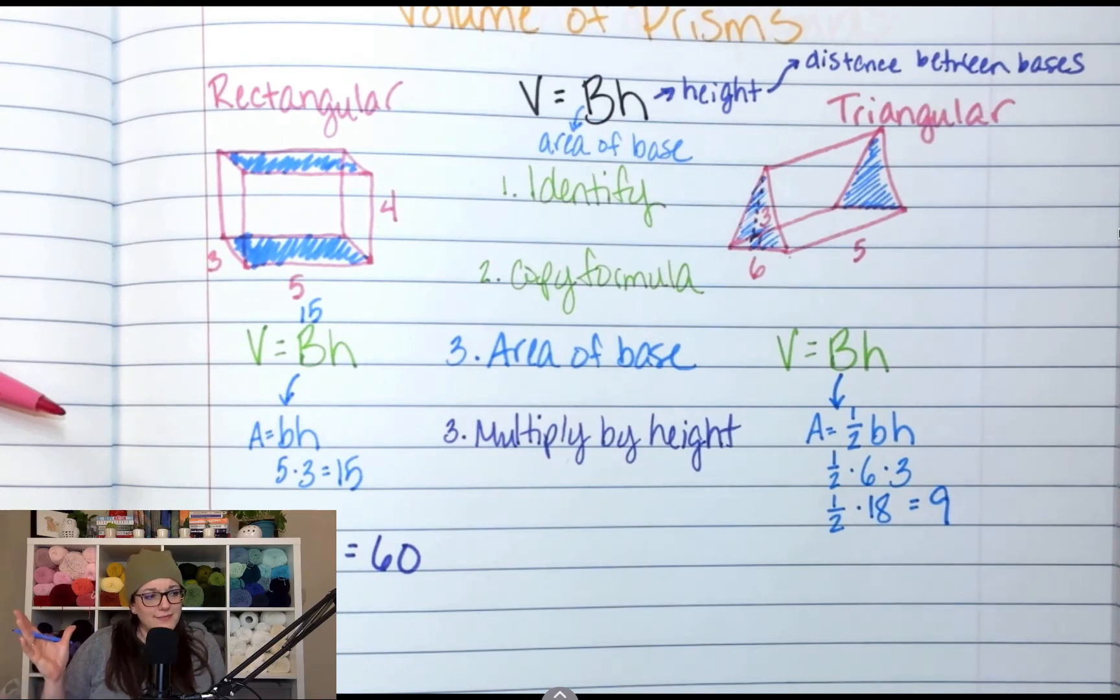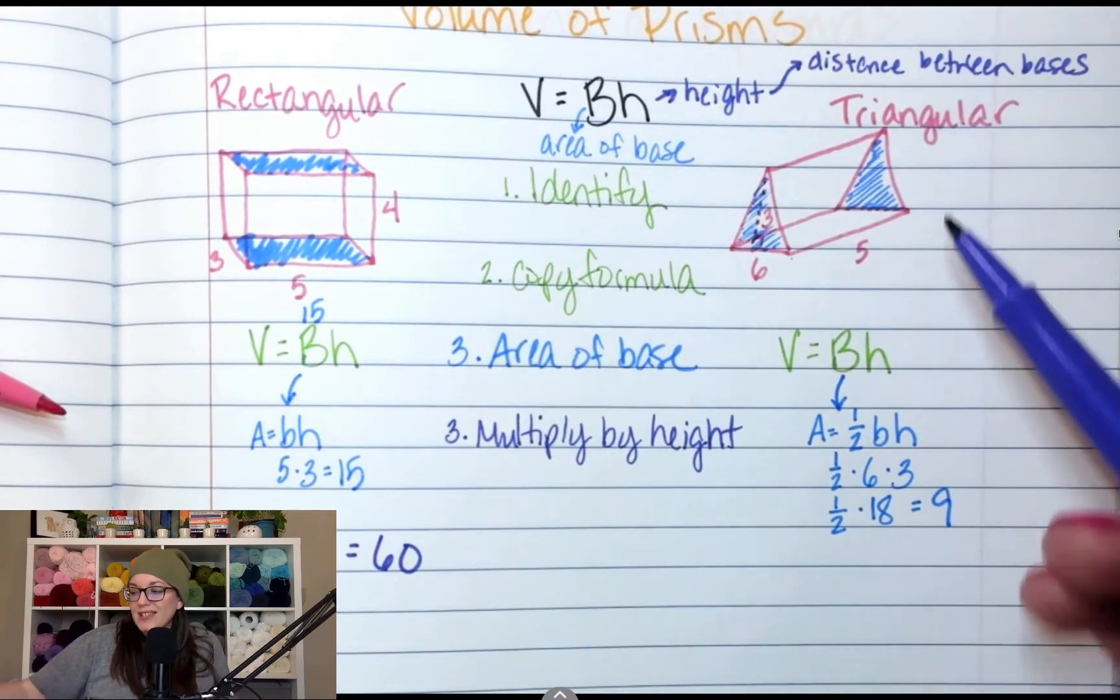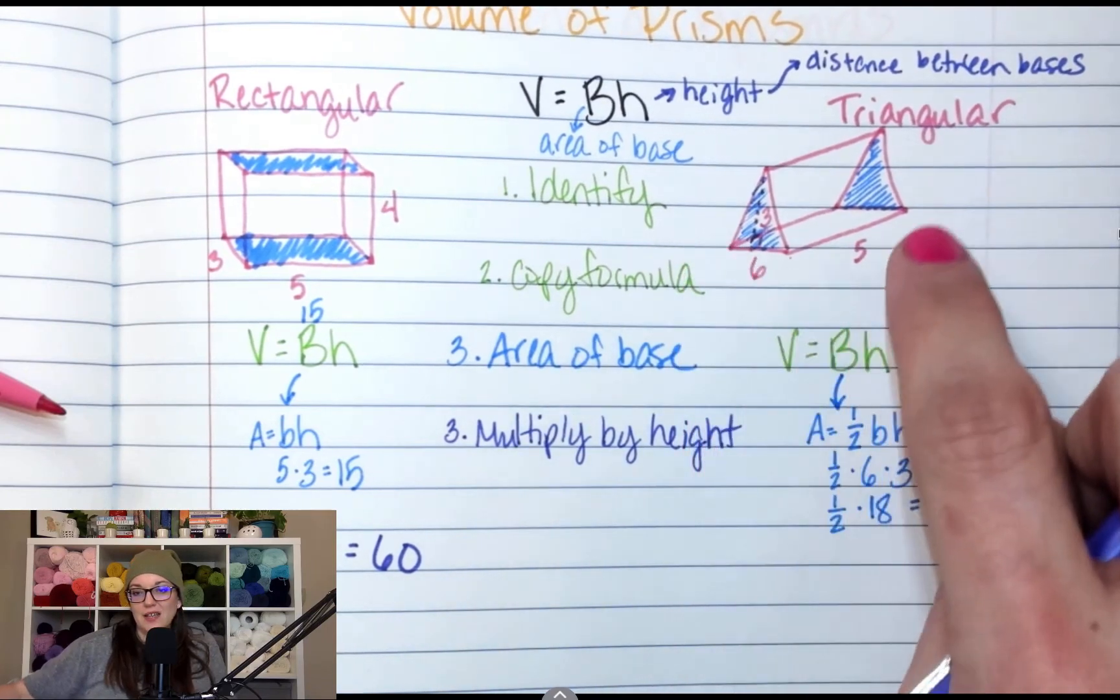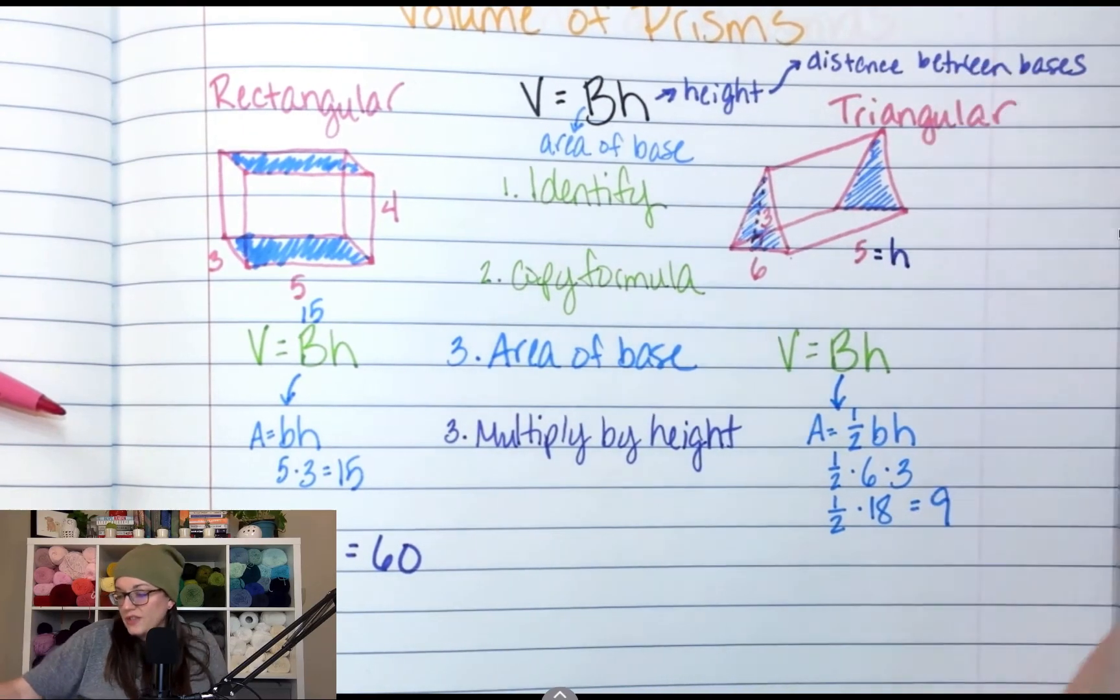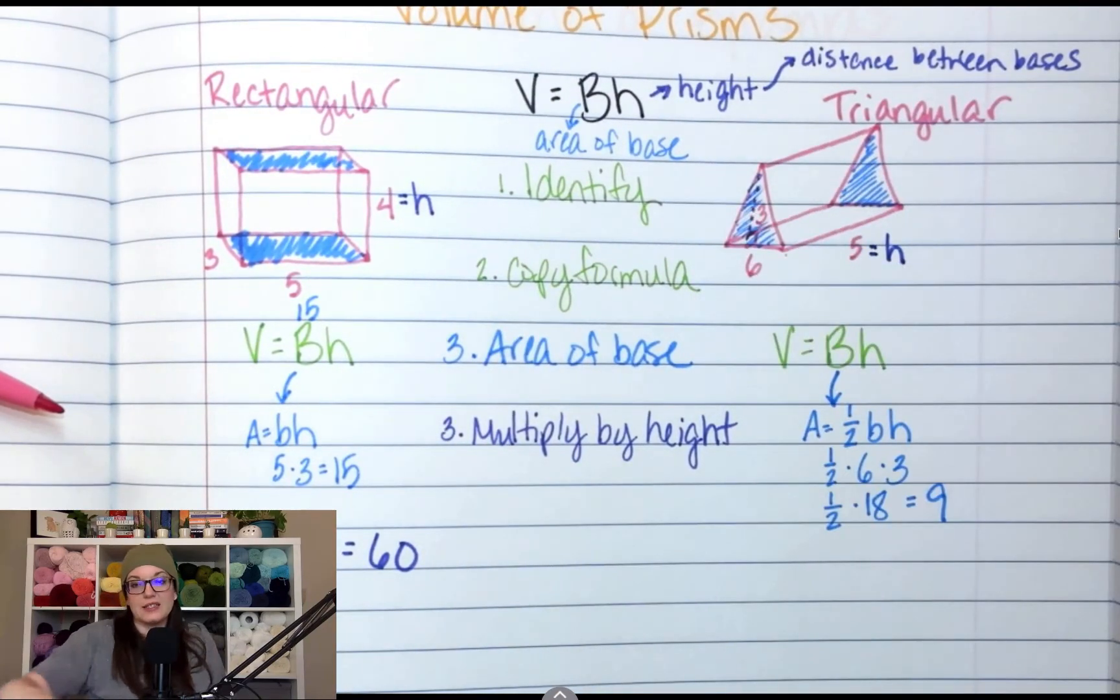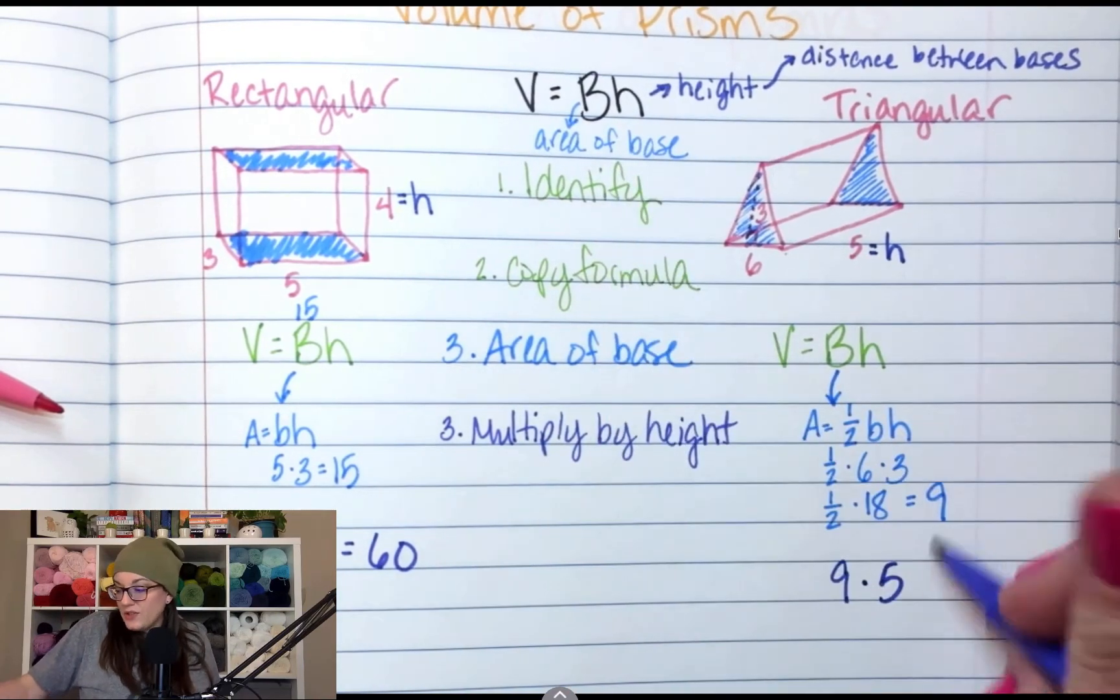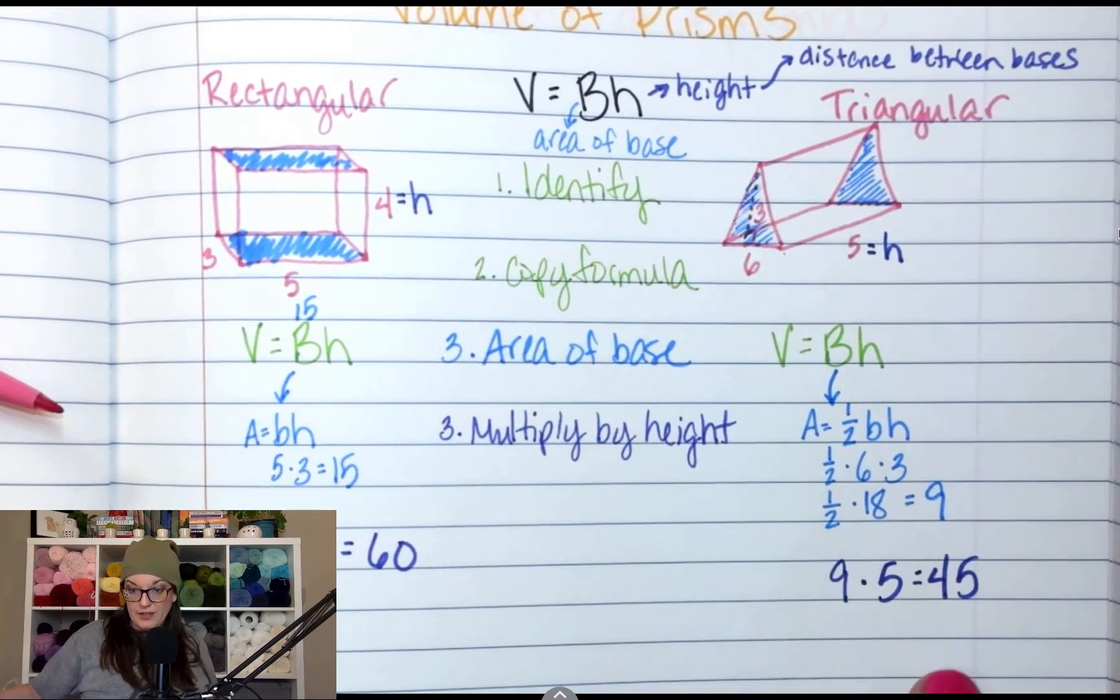Now, am I done? No, I just found the area of the base. I still have to multiply by the height. What is the height of this prism? Remember, height is the distance between bases. So what is the height of this prism? Five. This is H. Like this over here was H. So between the blue triangles is five. So I take nine times five, because that's capital B times five, because that's H, and I get 45. So the volume of this prism is 45.